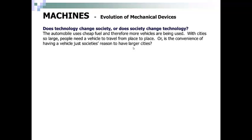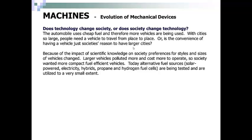Does technology change society or does society change technology? The automobile uses cheap fuel and therefore more vehicles are being used. With cities so large, people need a vehicle to travel from place to place. Or is the convenience of having a vehicle just society's reason to have larger cities? Because of the impact of scientific knowledge on society, preferences for styles and sizes of vehicles changed. Larger vehicles polluted more and cost more to operate, so society wanted more compact, fuel-efficient vehicles.